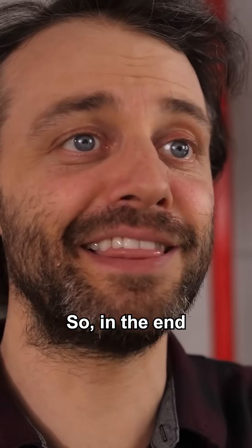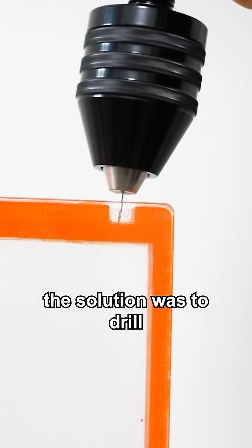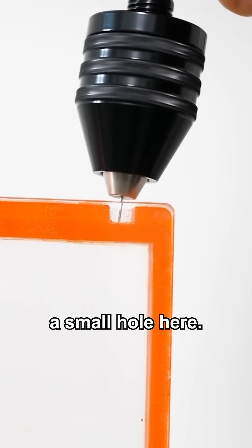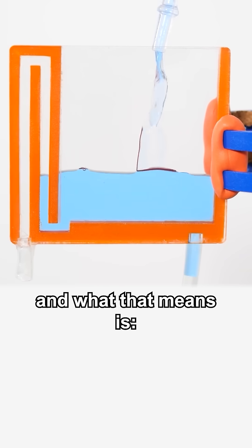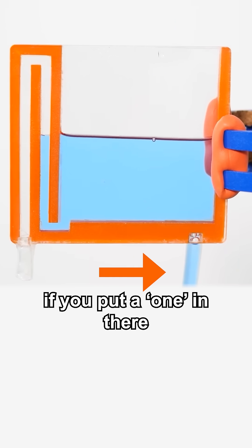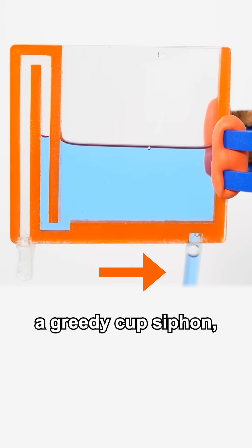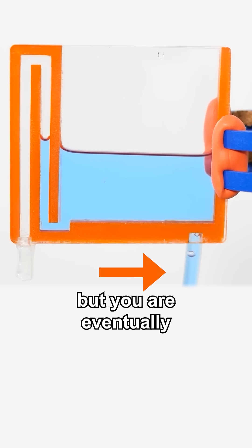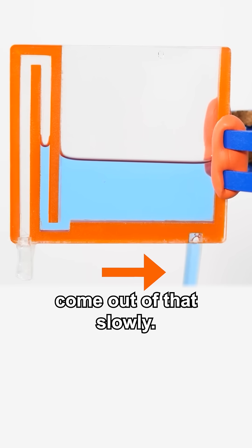An exclusive or is a little bit trickier. So in the end, the solution was to drill a small hole here. It's a slow leak. What that means is if you put a one in there and only a one, you're not gonna get a greedy cup siphon, but you are eventually gonna get it to all come out of that slowly.